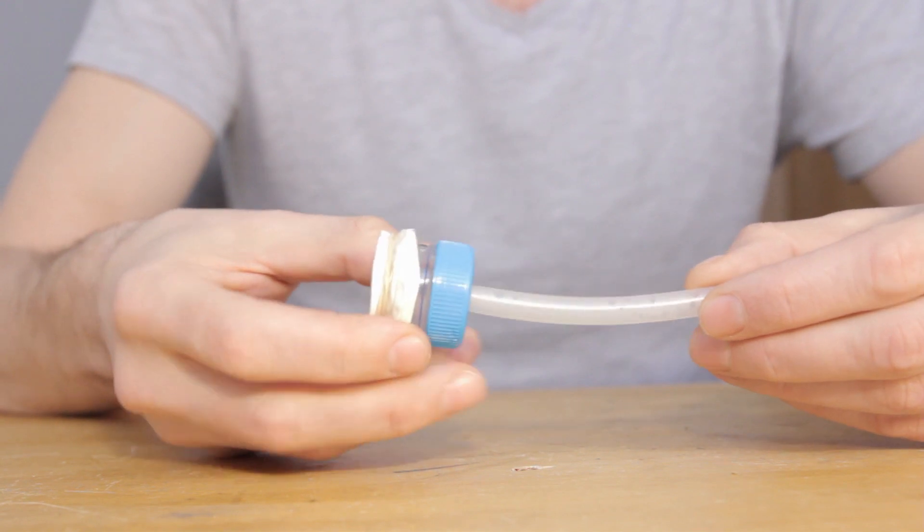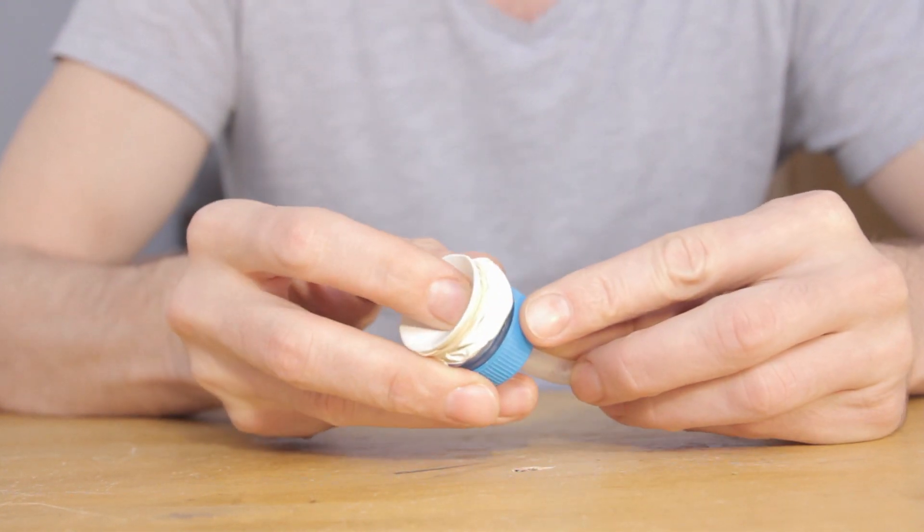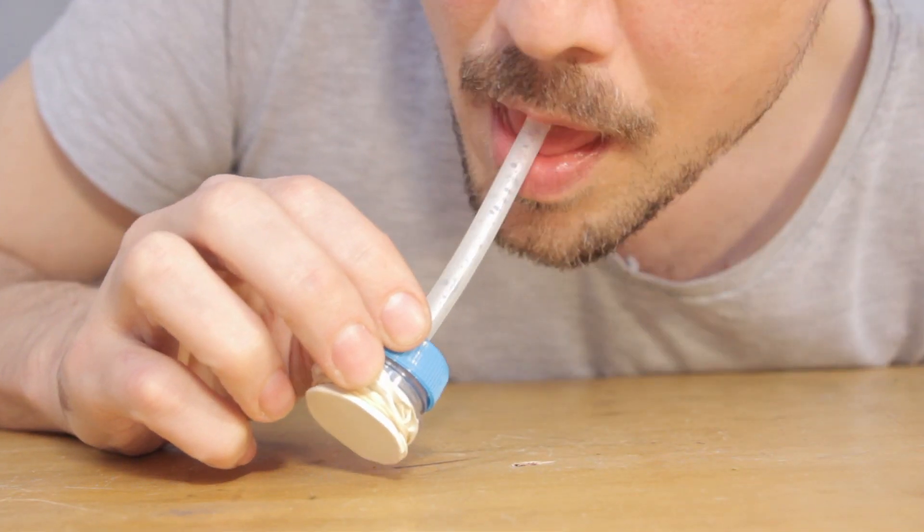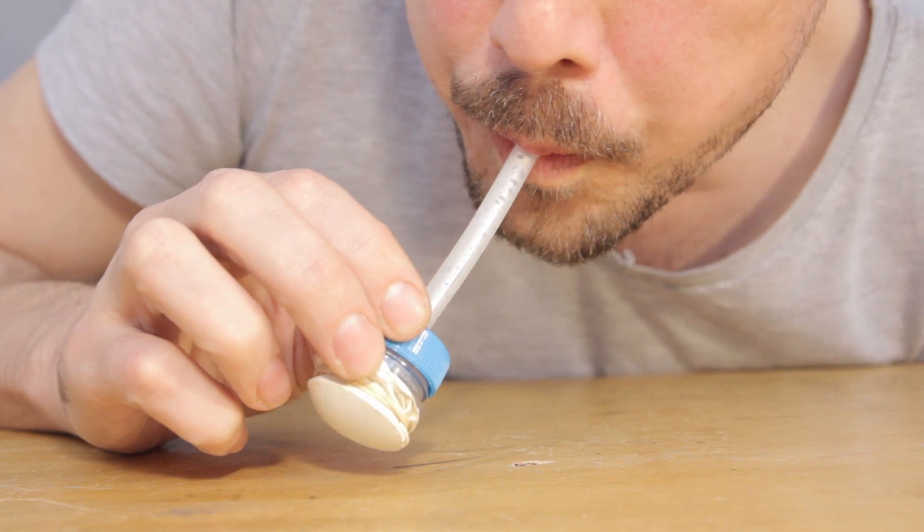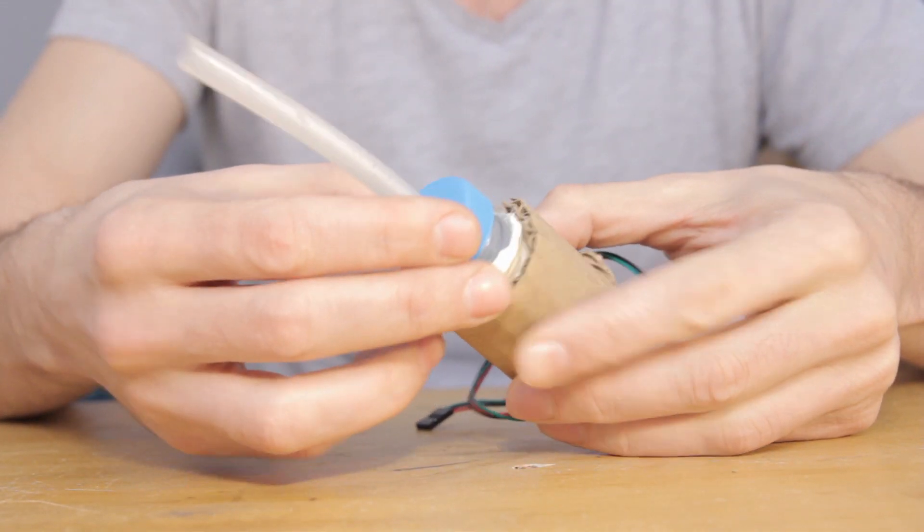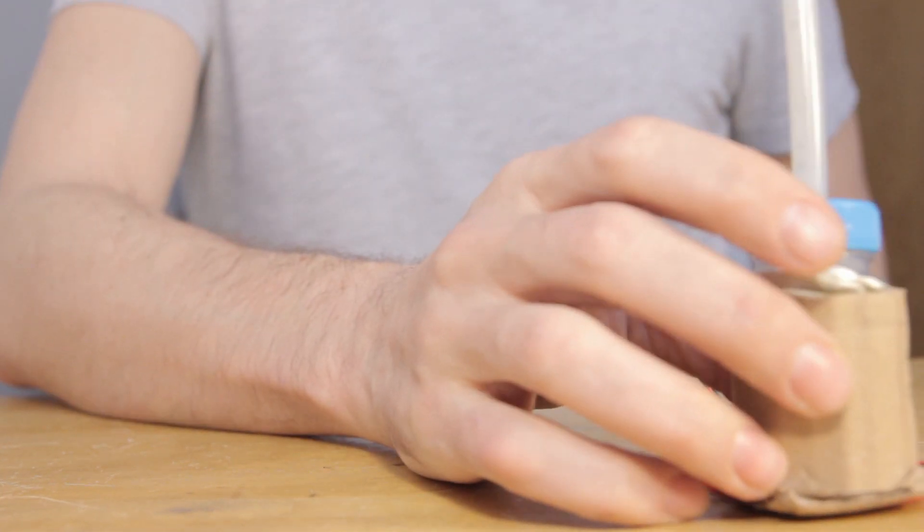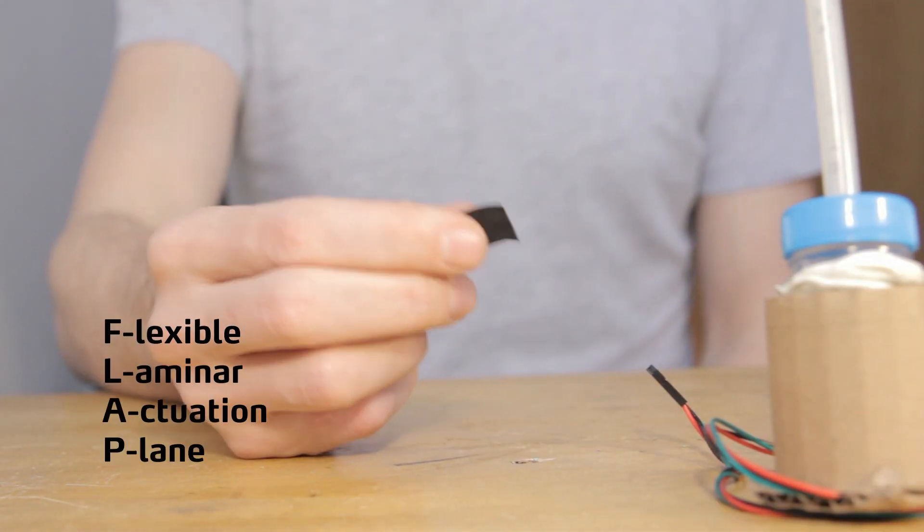In the breath pressure sensor, the main component which makes everything possible is the flexible membrane. It responds to air pressure and activates the sensors. So I came up with an equivalent solution for airflow. Introducing the flap.